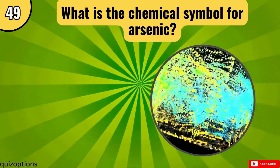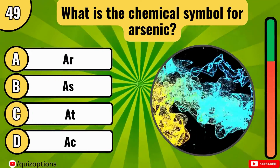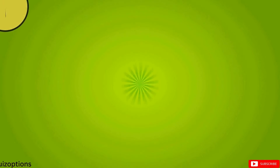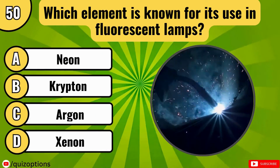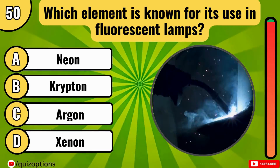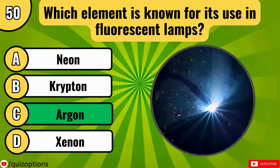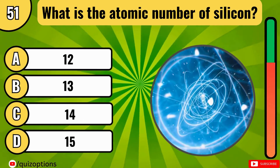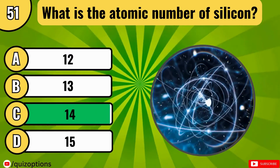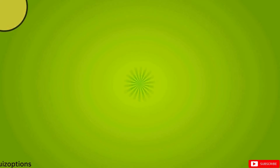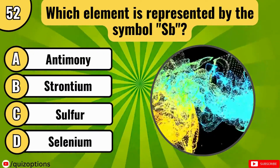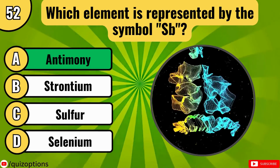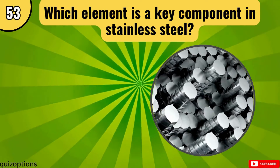What is the chemical symbol for arsenic? Which element is known for its use in fluorescent lamps? What is the atomic number of silicon? Which element is represented by the symbol Sb? Which element is a key component in stainless steel?